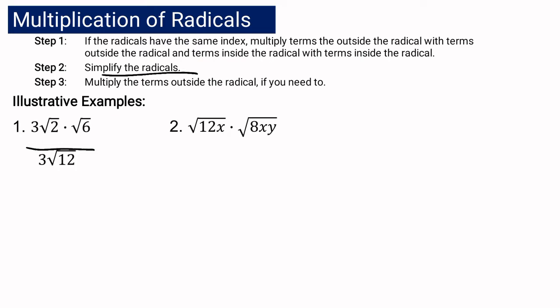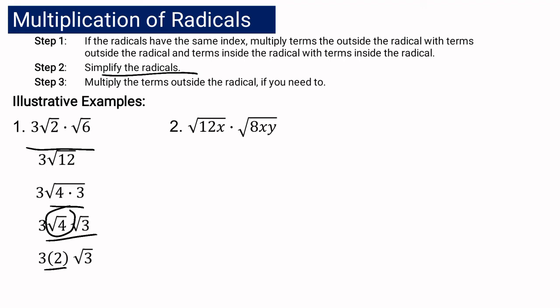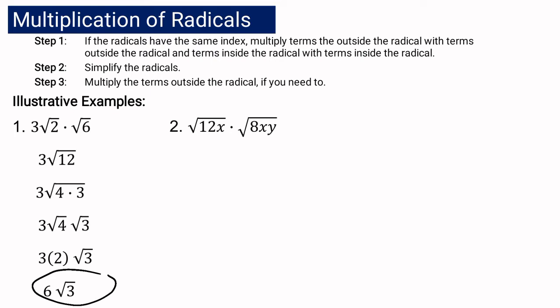Square root of 12 can be simplified. The correct factors are square root of 4 times 3. Using the law of radicals, it can be written as 3 times the square root of 4 times the square root of 3. We simplify square root of 4, which gives us 2. Since this is multiplication, we have 3 times 2, giving us 6 square root of 3. This is the final answer because it is already in simplest form. Remember: multiply coefficient to coefficient, radicand to radicand, then simplify if necessary.